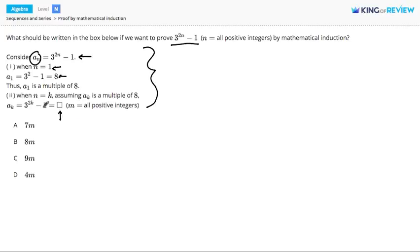So now we say let n equal some number k. And we can assume that a_k, term a_k, is a multiple of 8 because we have this starting reference term, which we know is a multiple of 8.